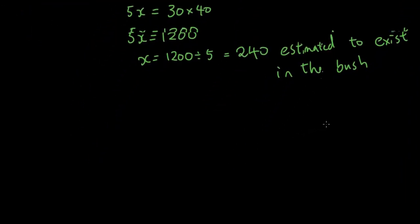So let's do another example instead of writing it all out. I'll type it out. So let's look at this question together. 50 fish were caught in a lake, tagged and released back into the lake. A few days later, 60 were caught and 10 of them were tagged. Estimate the total number of fish in the lake.